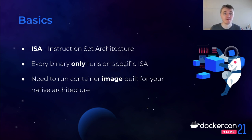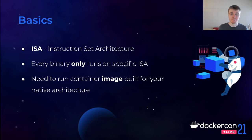Let's start from some very basics. What we mean by different architectures is that different types of CPUs implement different instructions. Once you build your binary, it already targets one specific instruction set. If you want this binary to run on another platform, it needs to be rebuilt again with a different binary. The same thing is true for container images as well, because they contain your binaries, so they also need to be different.